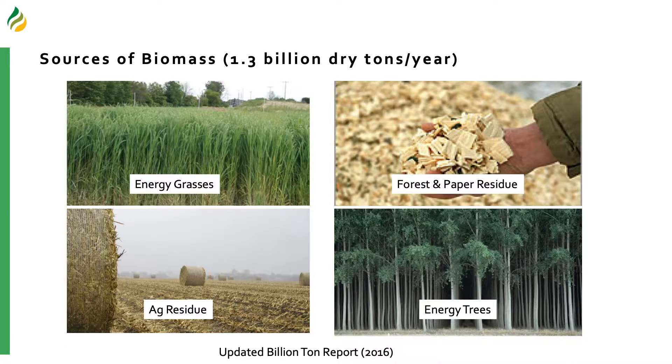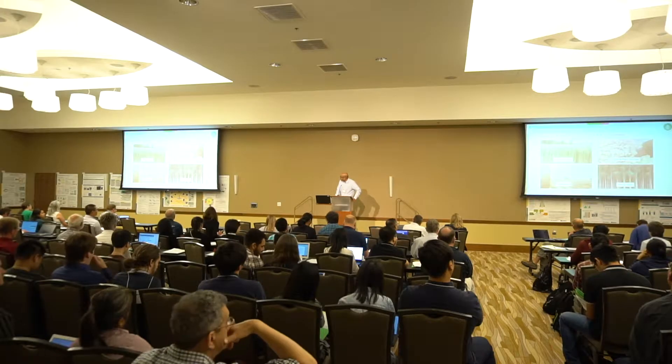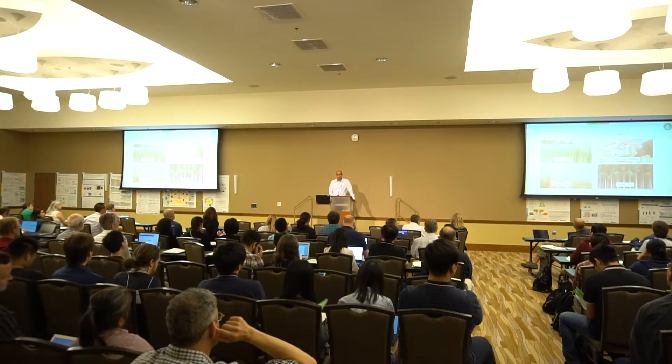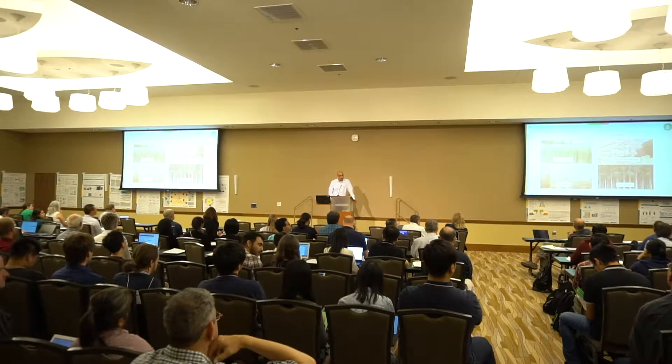Cellulose is the most abundant polymer available on our planet. It's present in all these bioenergy sources, and it is made up of glucose. Glucose is what yeast consume and produces all these different fuels and chemicals. Recent estimates from USDA DOE indicate we have about 1.3 billion tons of this biomass available, and if we convert all this into biofuels, we can increase ethanol production in the United States by 3 to 4 times.